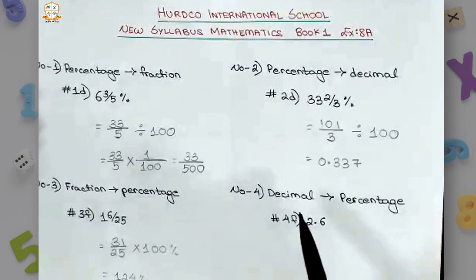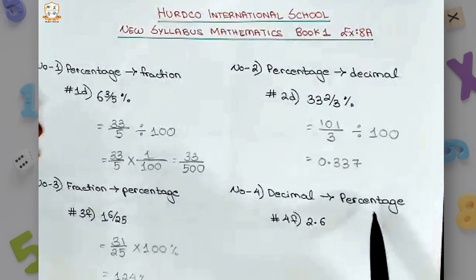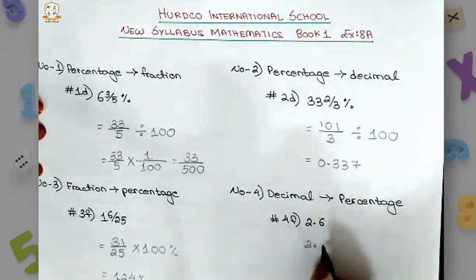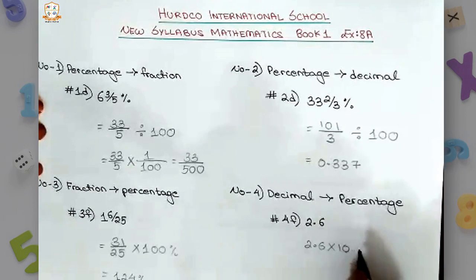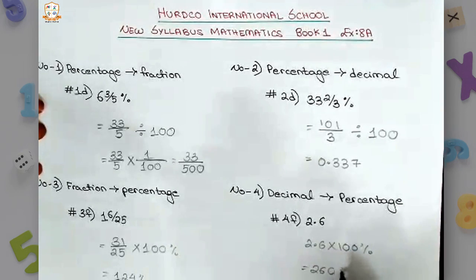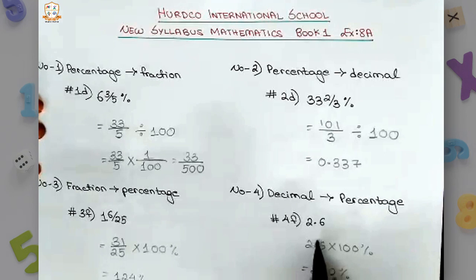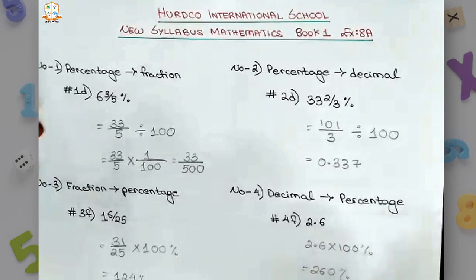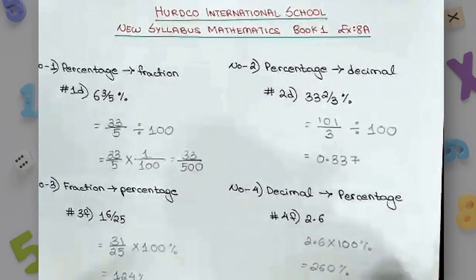Question number 4 asks us to convert decimals into percentages. Number 4f, the decimal given is 2.6. So 2.6 multiplied with 100 percent will give us 260 percent. This decimal will shift two digits to the right, so it will become 260.